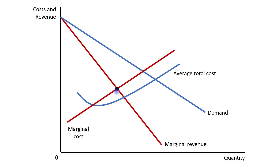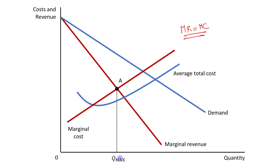This point denotes the profit maximization point, because profit is maximized where marginal revenue is equal to marginal cost — that means the intersection point of the marginal revenue curve and the marginal cost curve. This point is the profit maximizing point, named as Point A, and Q_max is the profit maximizing quantity.